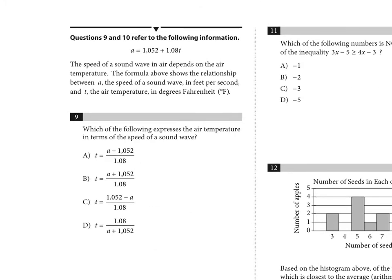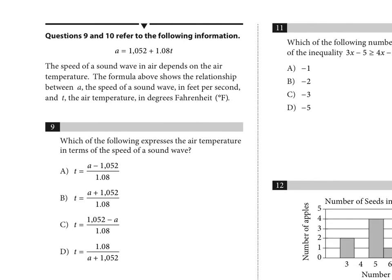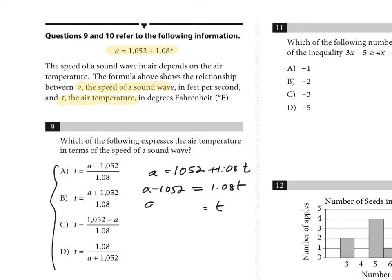Questions nine and ten use the same information: the speed of a sound wave in air is given by a equals 1052 plus 1.08t, where a is the speed and t is the air temperature. Question nine asks you to express t in terms of a. Subtract 1052 from both sides, then divide by 1.08: t equals (a minus 1052) divided by 1.08.